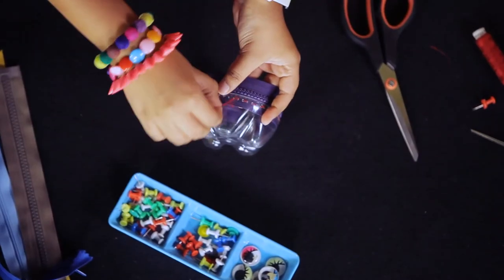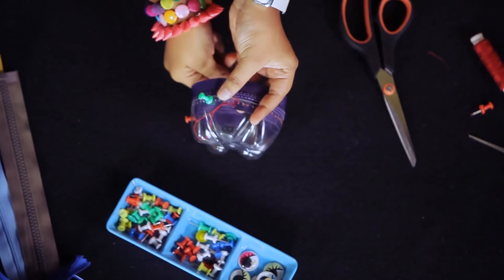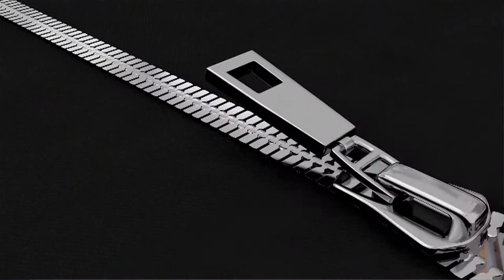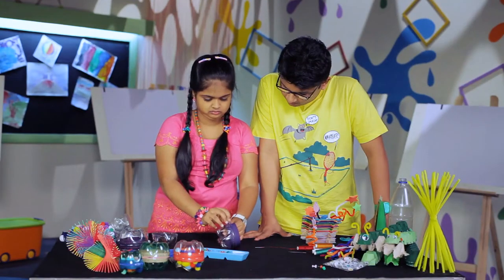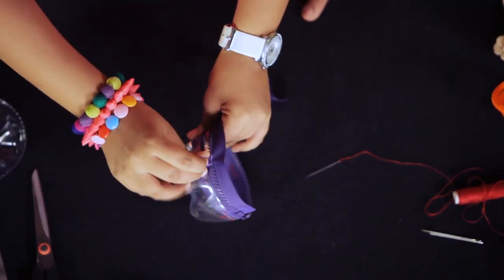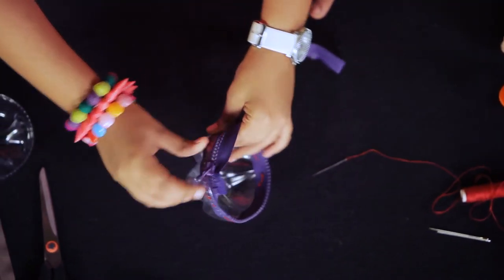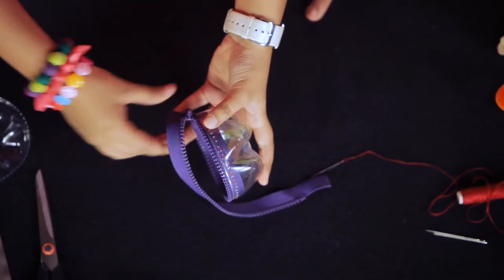Sew the zipper to the bottle, removing the pins as you sew. Unzip the zipper and repeat the previous steps, pinning and sewing the zipper to the second bottle half.